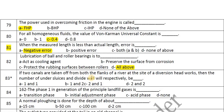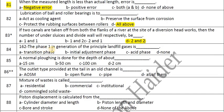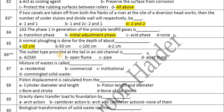If two canals are taken from both flanks of a river at the site of a diversion headwork, the number of undersluices and the divide wall will respectively be 2 and 2. The phase one in generation of principal landfill gases is the initial adjustment phase. Normal ploughing is done to a depth of about 15 cm. The outlet type provided at the tail of an old channel is an open flume.